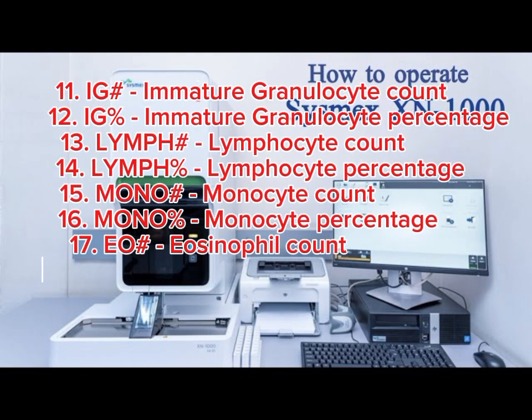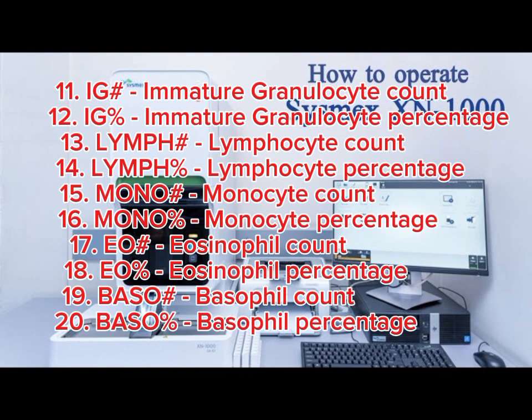8: PLT – Platelet Count. 9: NEUT# – Neutrophil Count. 10: NEUT% – Neutrophil Percentage. 11: IG# – Immature Granulocyte Count. 12: IG% – Immature Granulocyte Percentage. 13: LYMPH# – Lymphocyte Count. 14: LYMPH% – Lymphocyte Percentage. 15: MONO# – Monocyte Count. 16: MONO% – Monocyte Percentage. 17: EO# – Eosinophil Count. 18: EO% – Eosinophil Percentage.